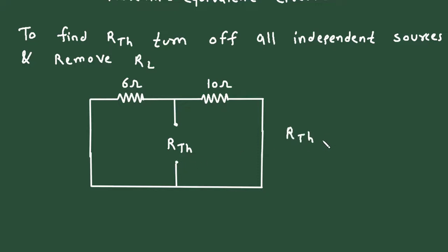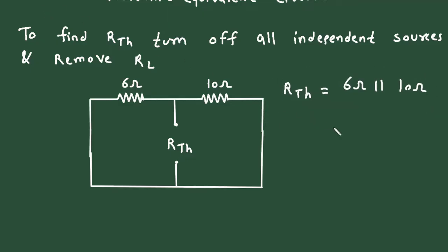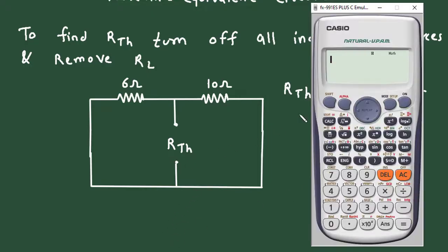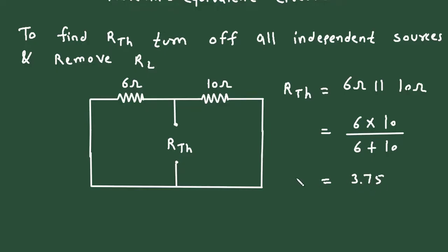So here we can write Rth is equal to — here we can see this 6 ohm and 10 ohm are connected in parallel. So it will be 6 ohm parallel with 10 ohm, which gives 6 into 10 divided by 6 plus 10. So it is 3.75 ohm, which is the value of Rth.